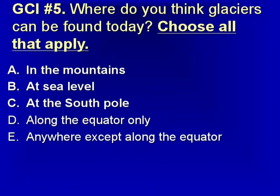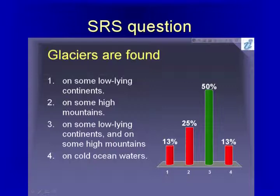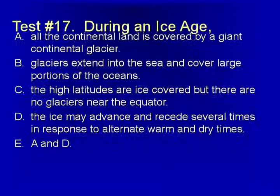Here's one about glaciers — where would you think glaciers are found today? That's the geoscience concept inventory version. The student response system version would be: glaciers are found here. The answer choices aren't even the same ones as before. You can see the students actually did very well on this question. I would also sometimes put a similar question on the test to see how they were doing, though I haven't analyzed all that test data yet.